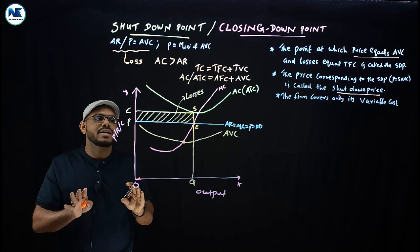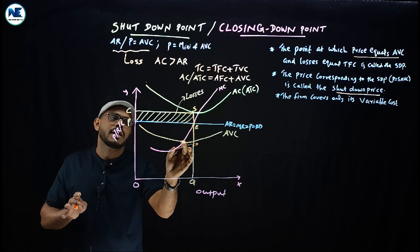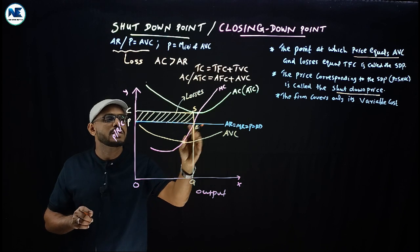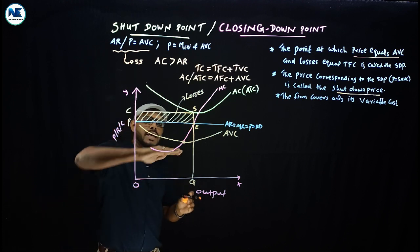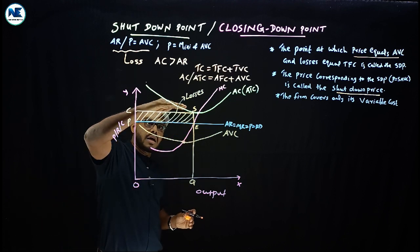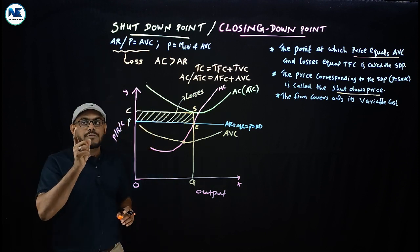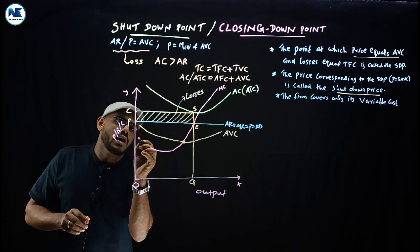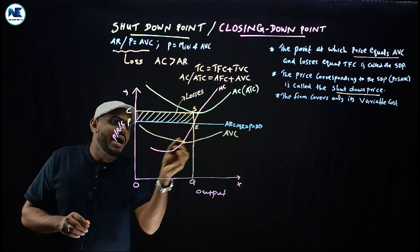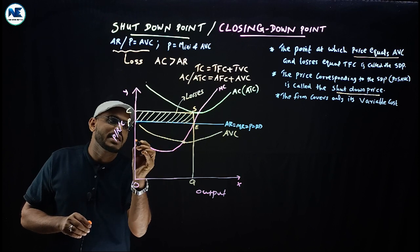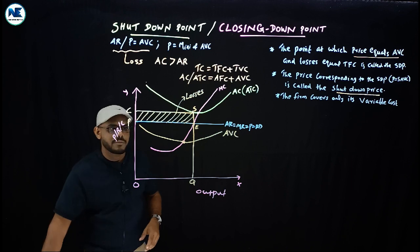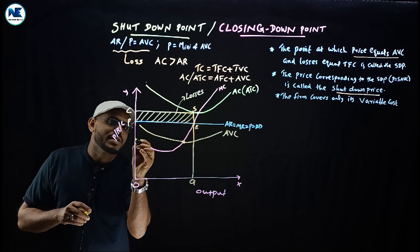The firm can manage or cover its average variable cost. The difference between average cost and average variable cost represents the fixed cost component. Listen very carefully to this part.